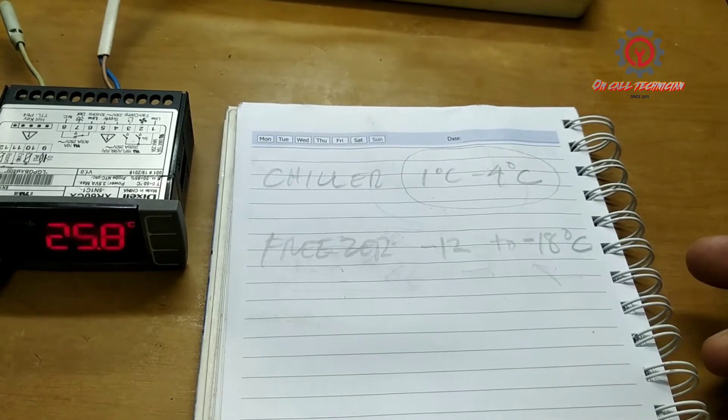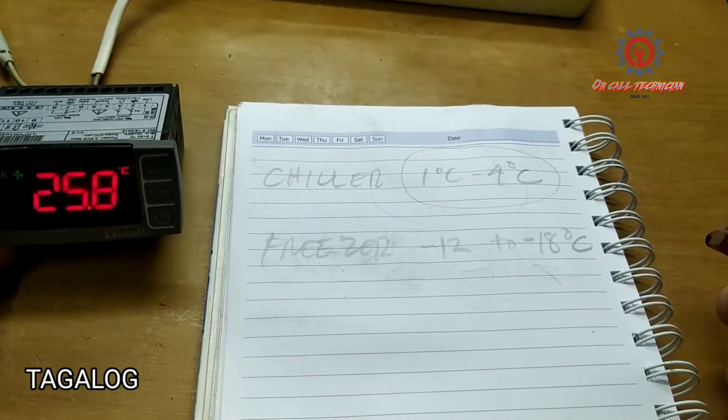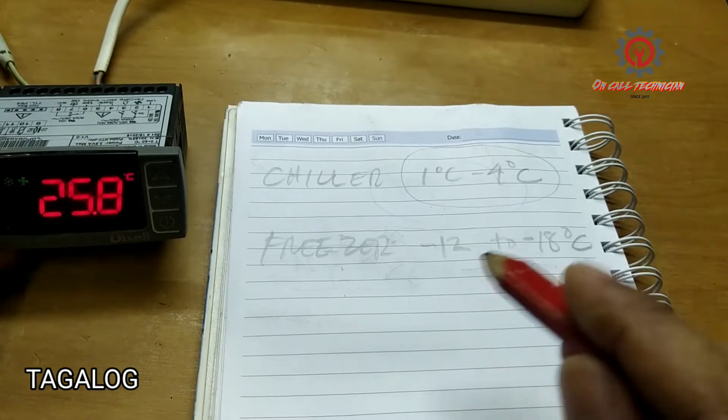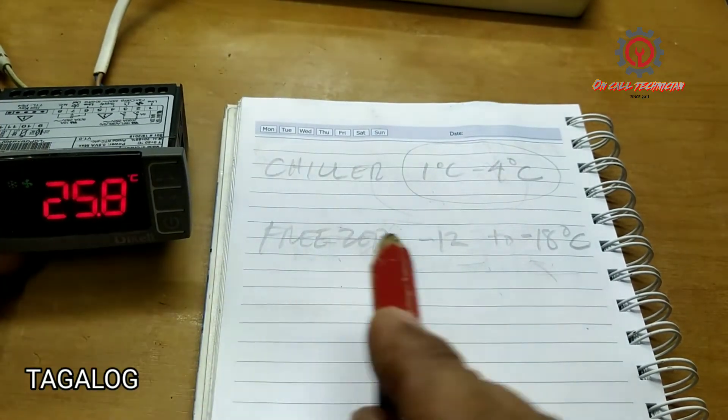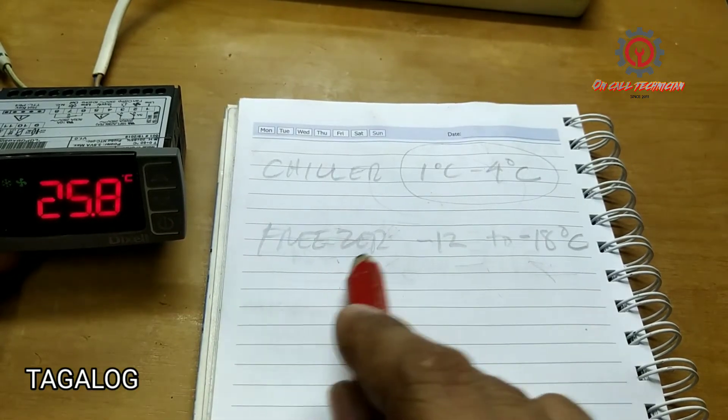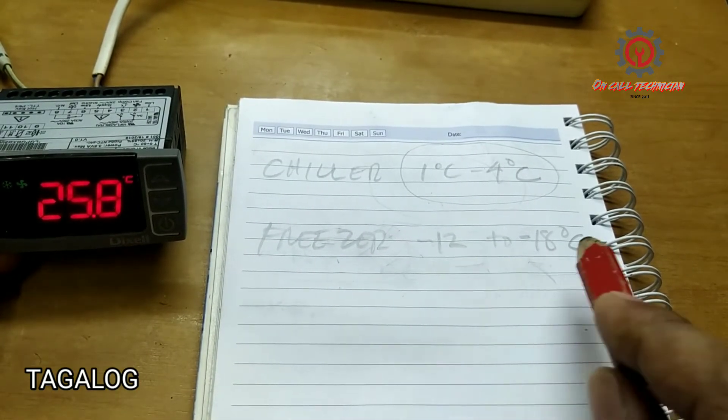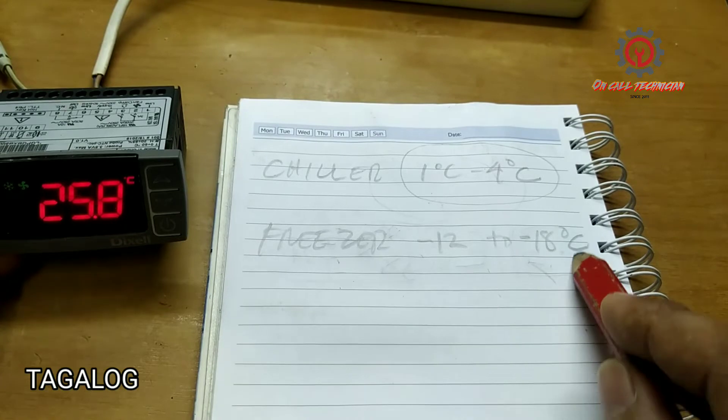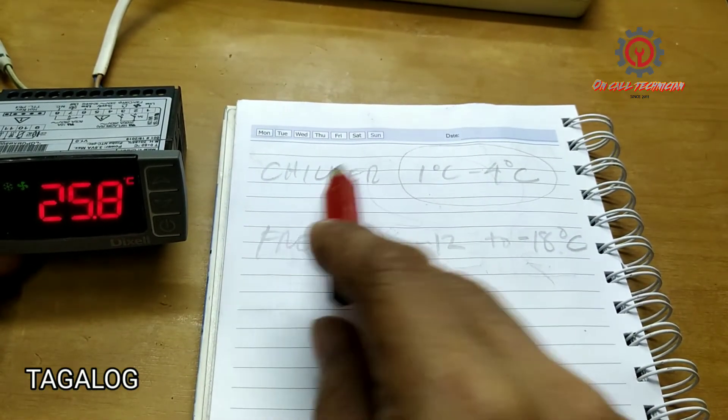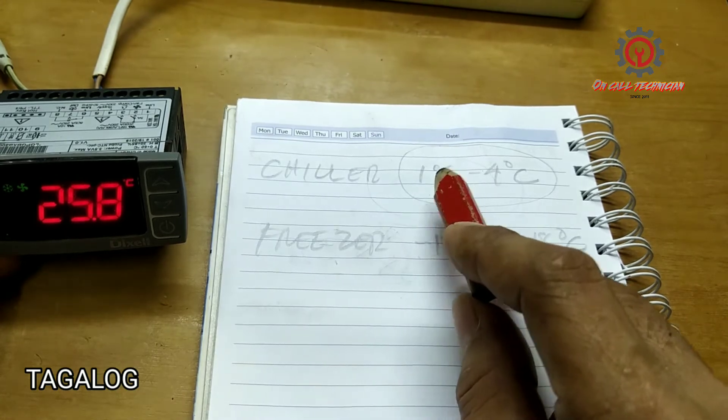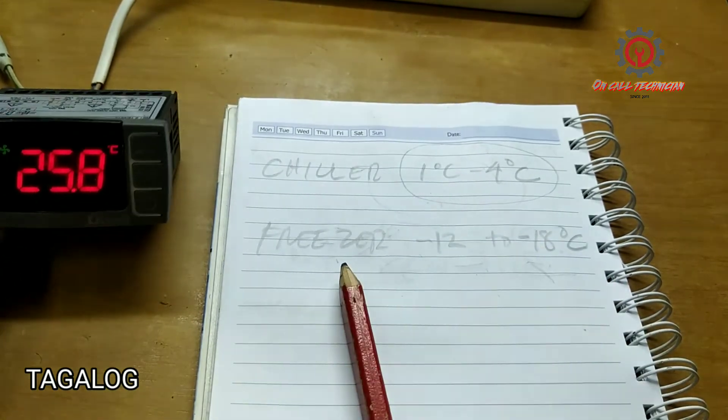Maligayang pagdating sa aking channel guys. Ngayon yung papakita ko sa inyo ang pinakamabilis na pagpalit ng setting ng ating Dixell control mula sa freezer setting na ito ay negative 12 to negative 18 at ang setpoint niya is negative 18. Papalitan natin siya to chiller setting na ang setpoint is 1 degree Celsius.